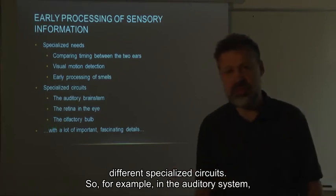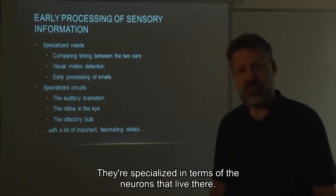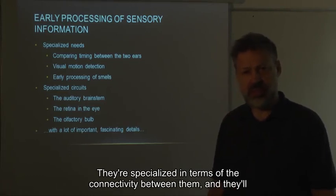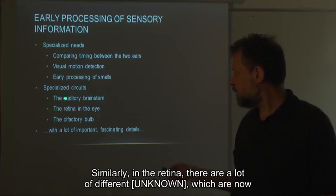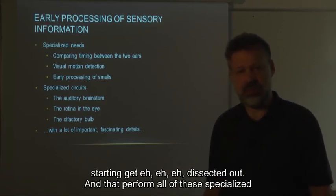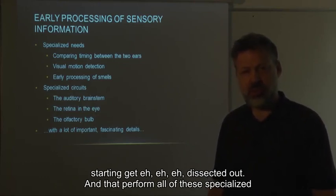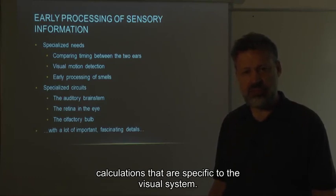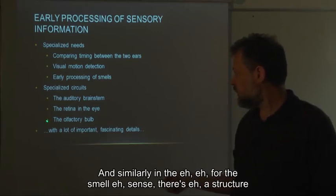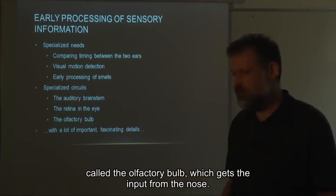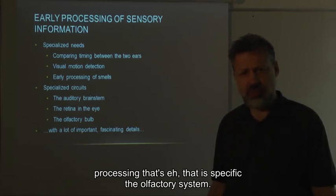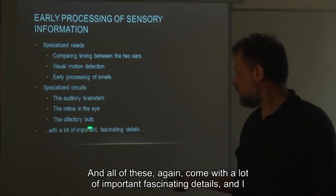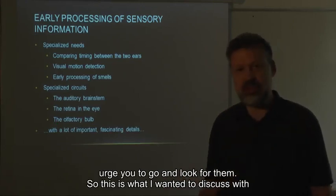All of these specialized needs are met by different specialized circuits in different sensory systems. In the auditory system, there are specialized circuits in the auditory brainstem — specialized in terms of the neurons that live there, the connectivity between them, and the computations they perform. Similarly, in the retina there are many different circuits being dissected out that perform calculations specific to the visual system. For the sense of smell, there is a structure called the olfactory bulb that receives input from the nose and has specialized circuitry for early processing specific to the olfactory system. I urge you to go and look for these fascinating details.